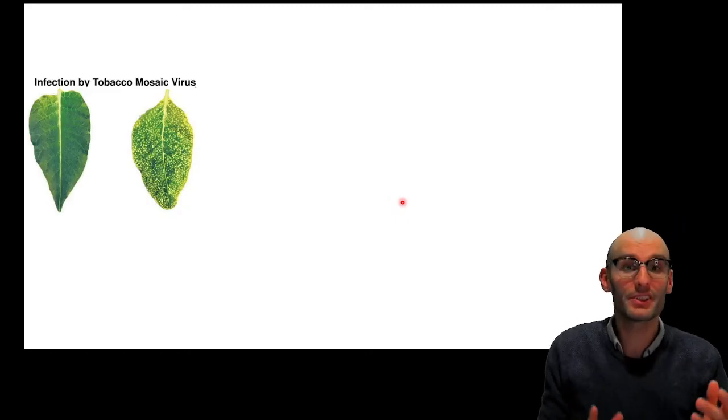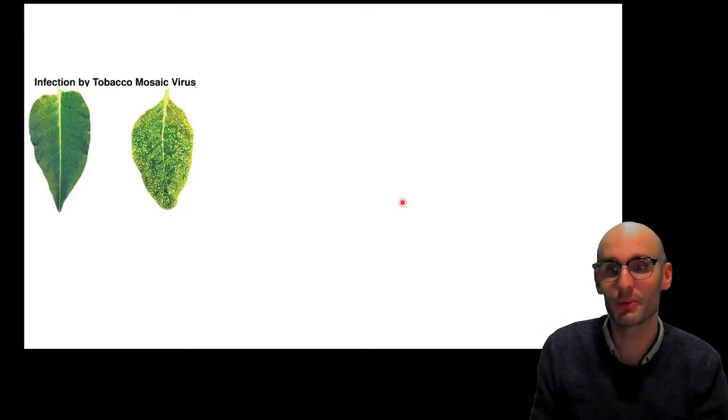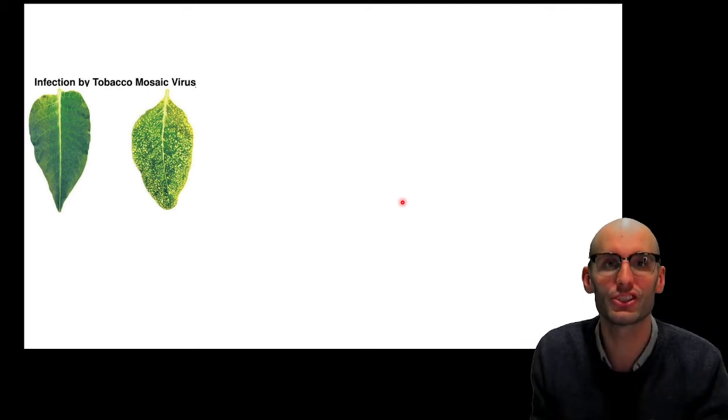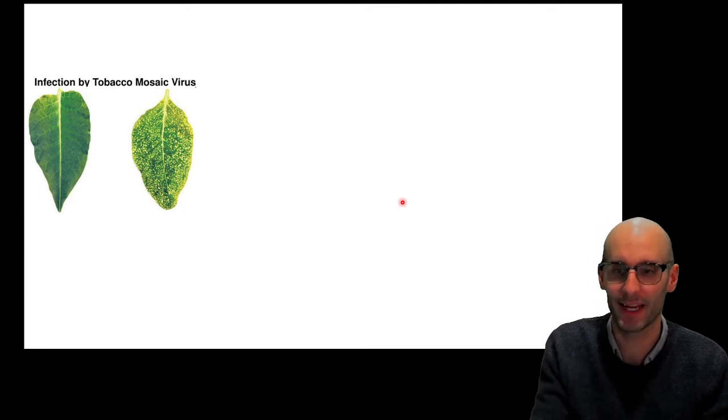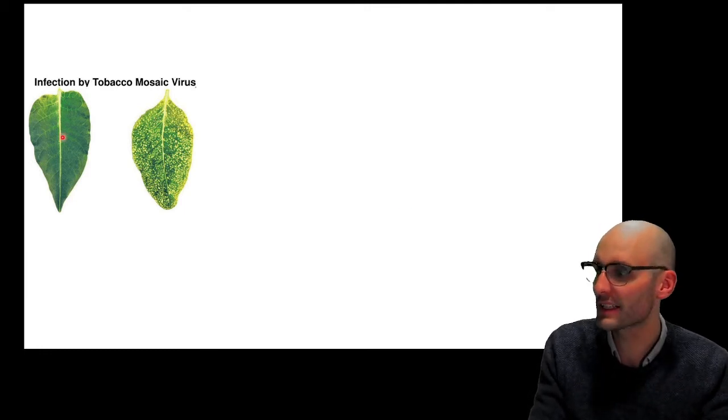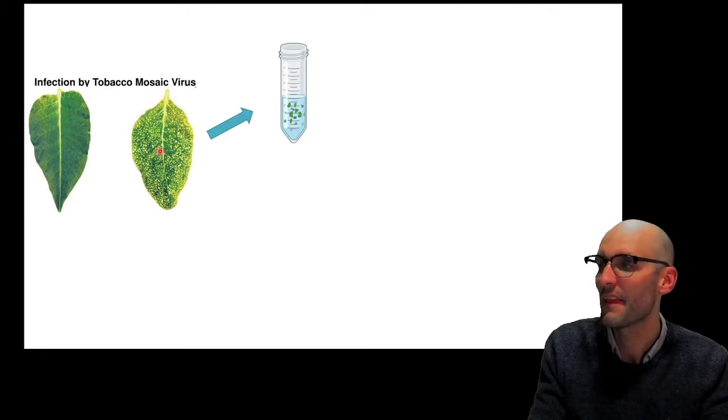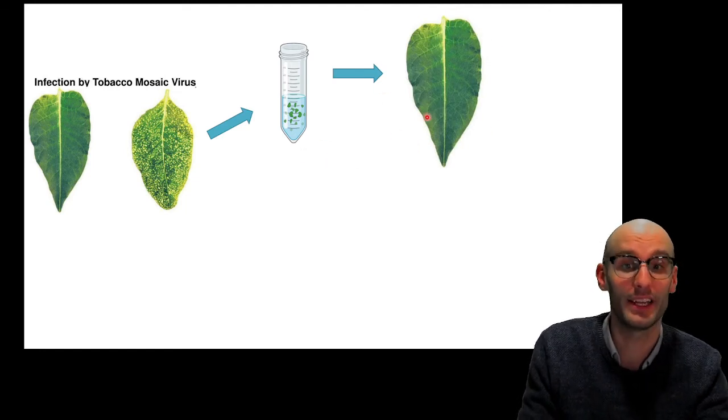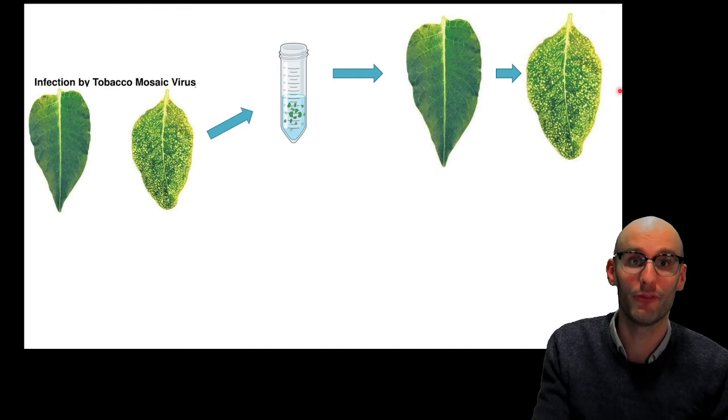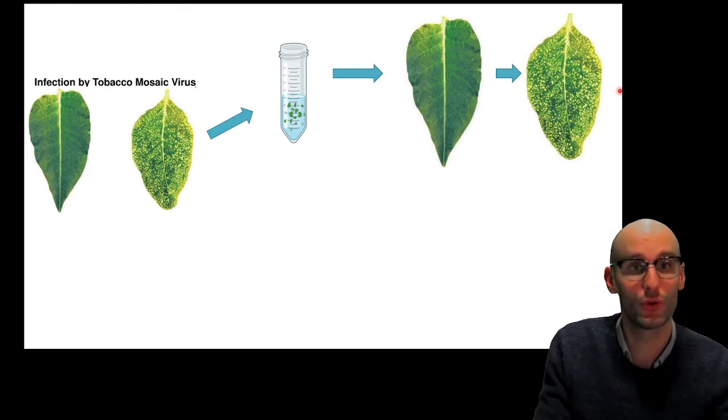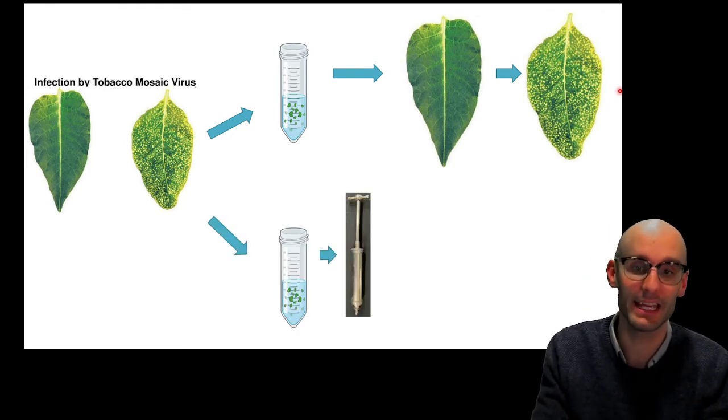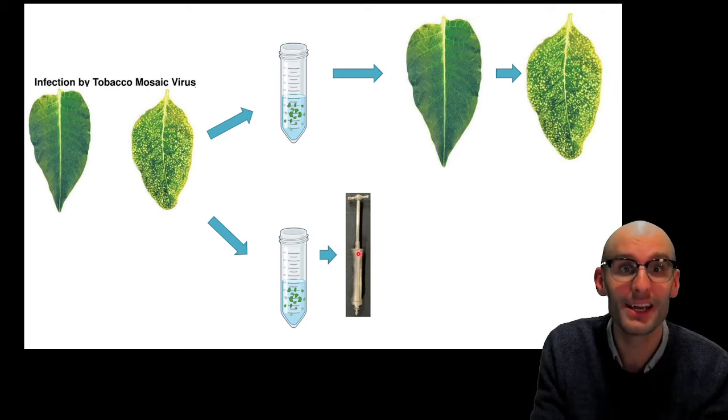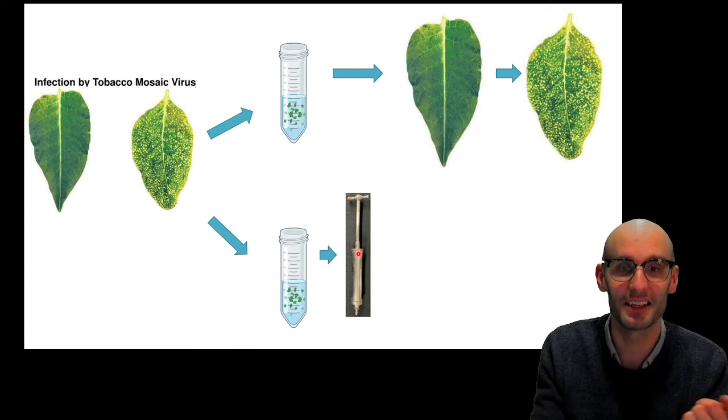Now the first virus identified essentially was the tobacco mosaic virus and this is essentially what happened. They went to prove the germ theory. So here we have an infected leaf and here we have an uninfected leaf. They mushed up the infected leaf and you can apply it to an unaffected leaf and it will become infected. So now to prove germ theory all we have to do is do that again but put it through the filter which should filter out all the germs, all the cellular germs.